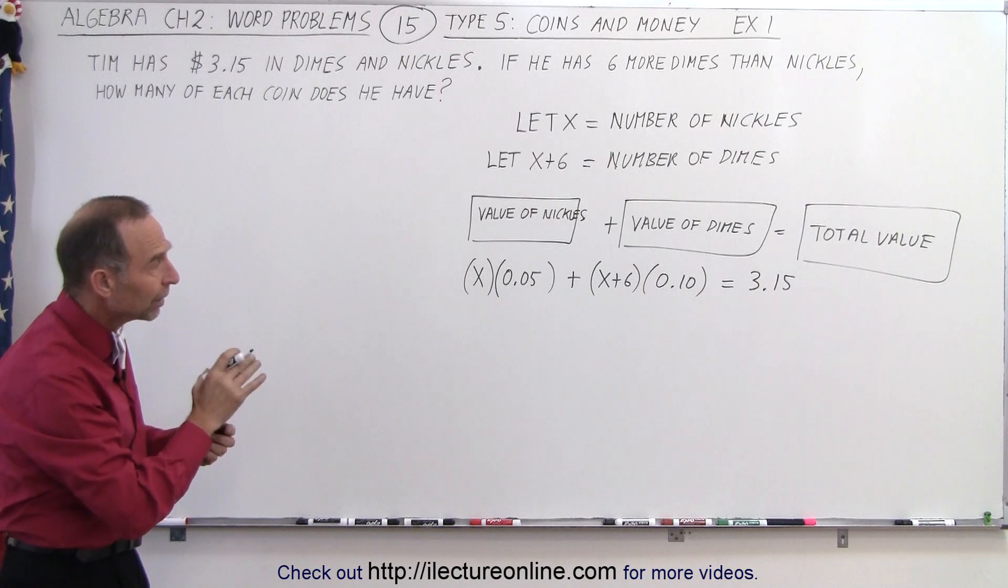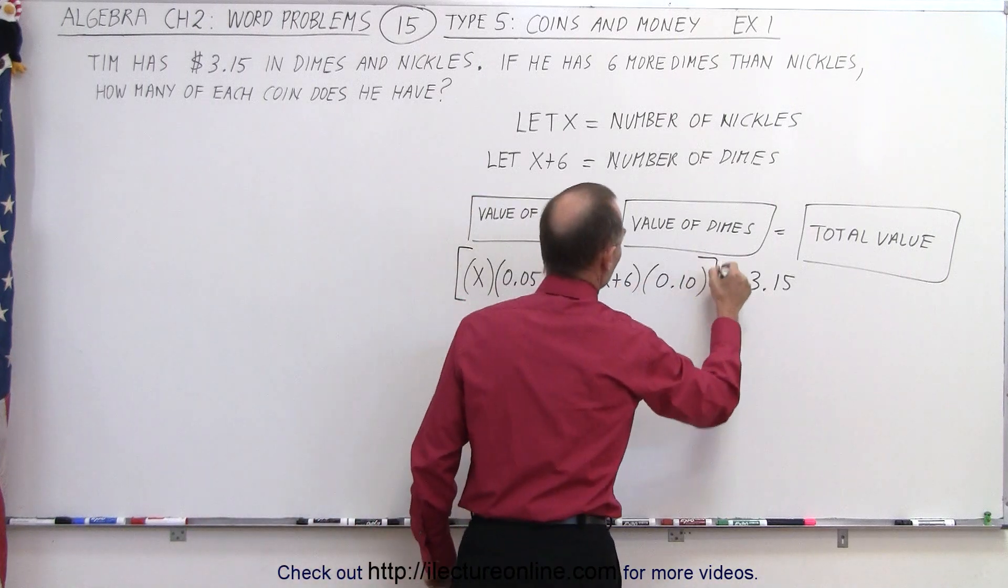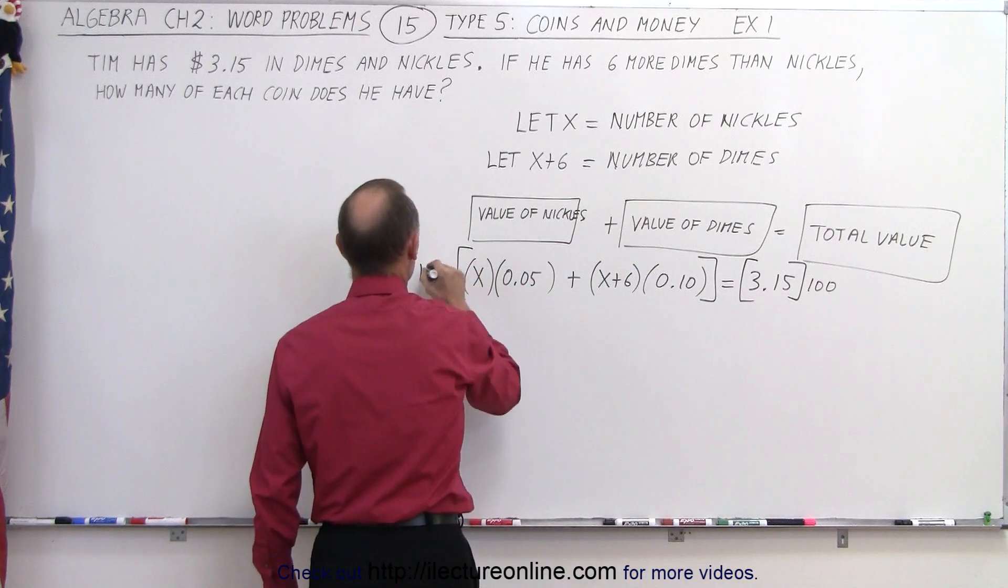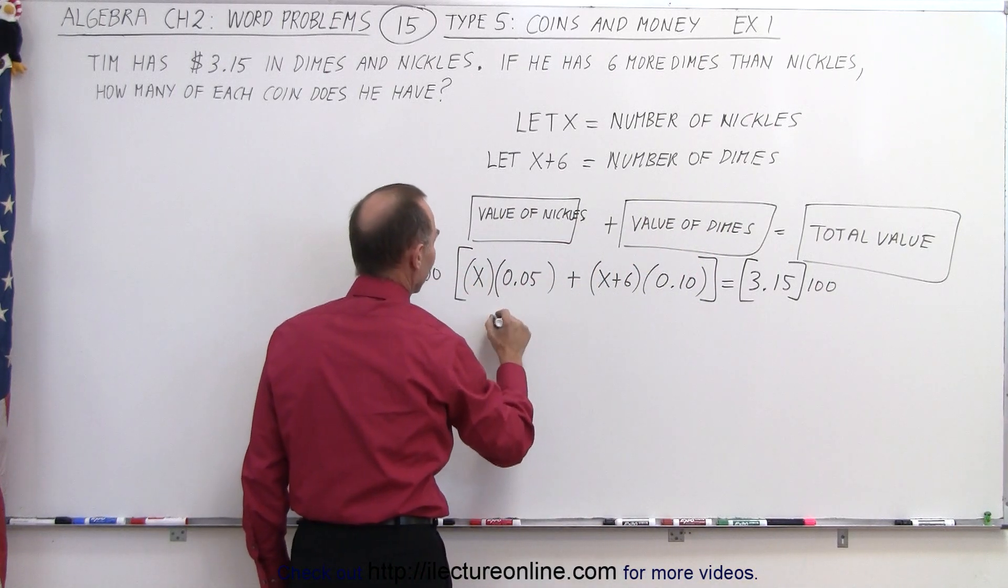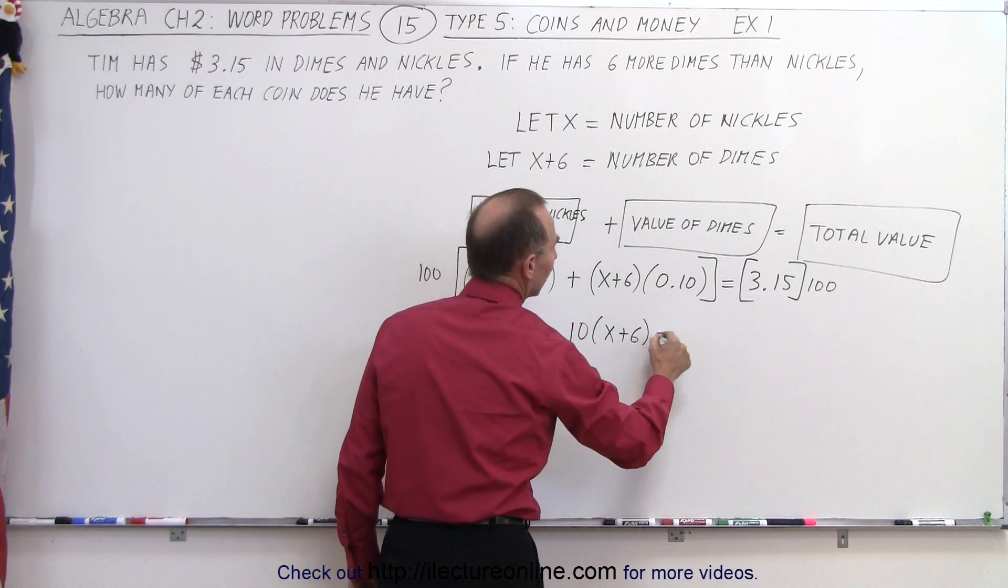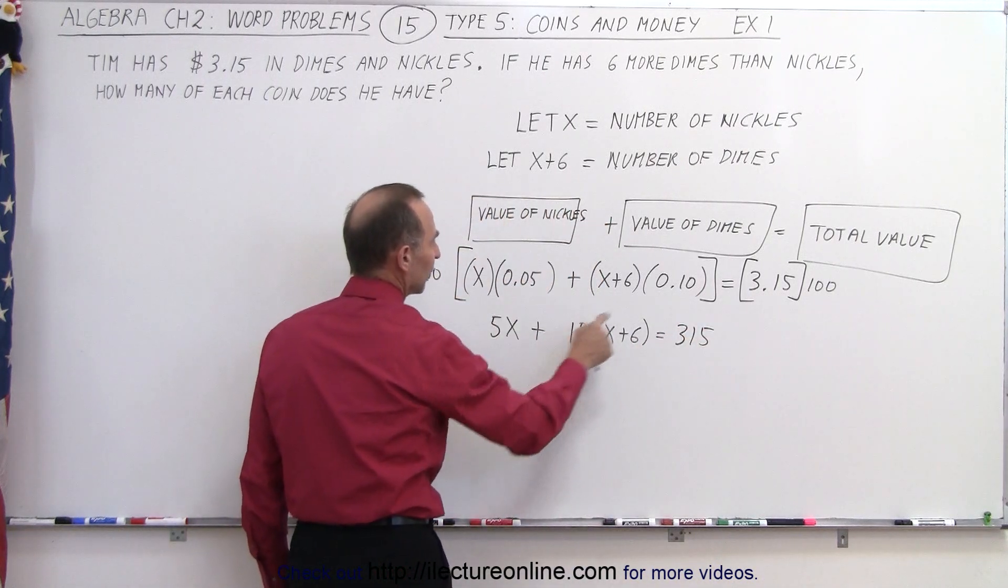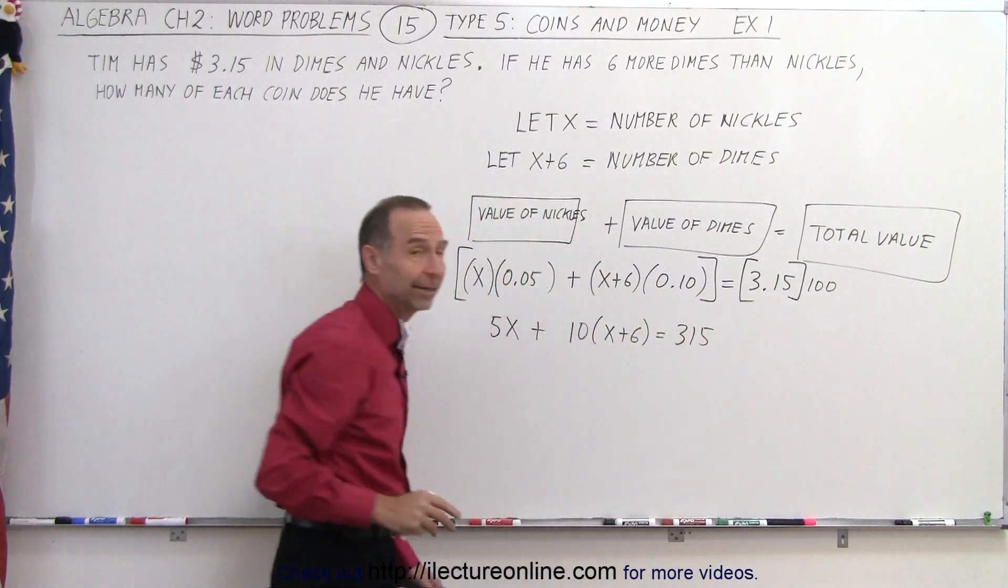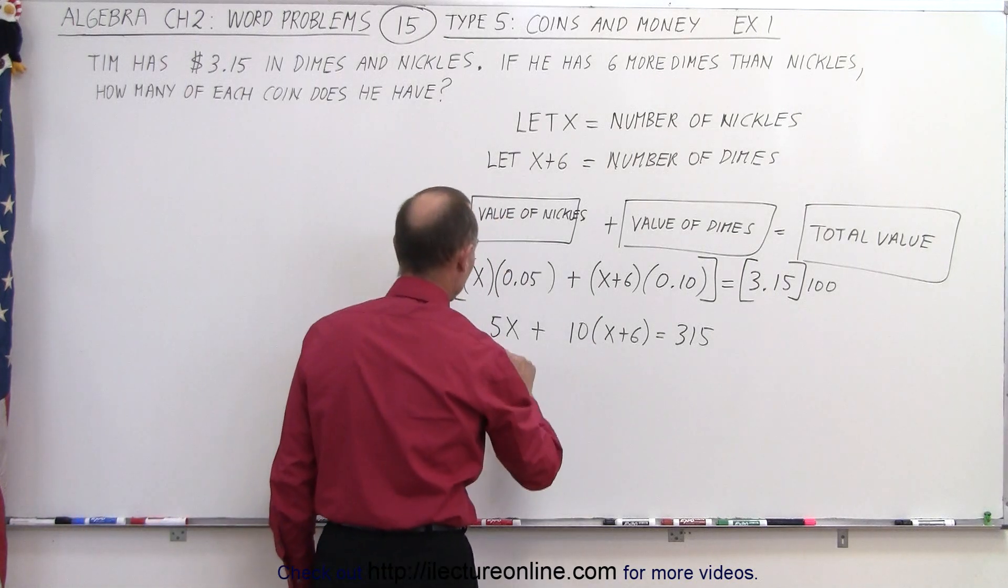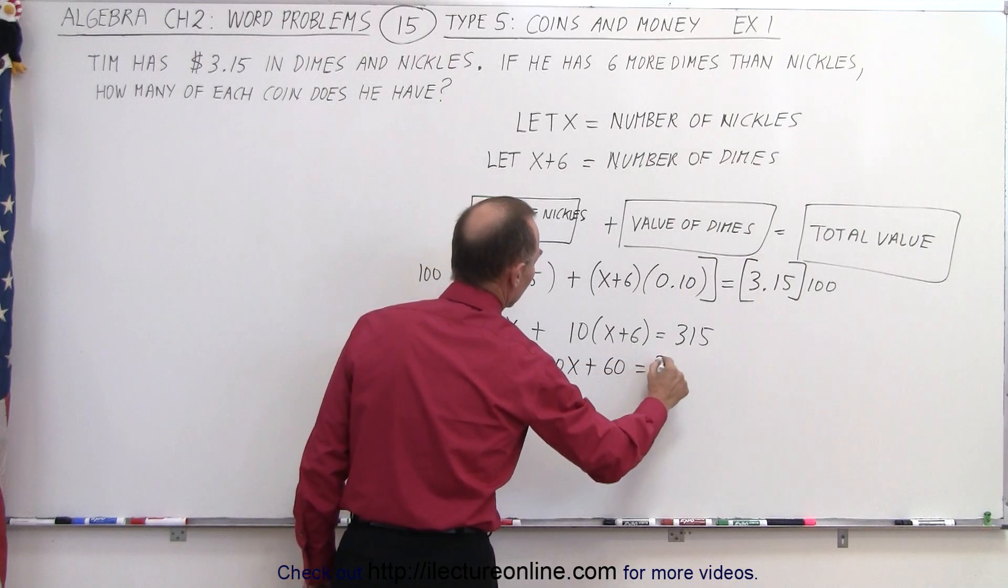Now we want to get rid of the decimals and therefore we're going to multiply both sides by 100. So multiply the left and the right side by 100. If we do that we get 5 times x plus 10 times x plus 6 is equal to 315. Notice we made this into a 5, we made this into a 10, we made this into 315 by multiplying both sides by 100. Now we get rid of the parentheses. So 5x plus 10x plus 60 equals 315.